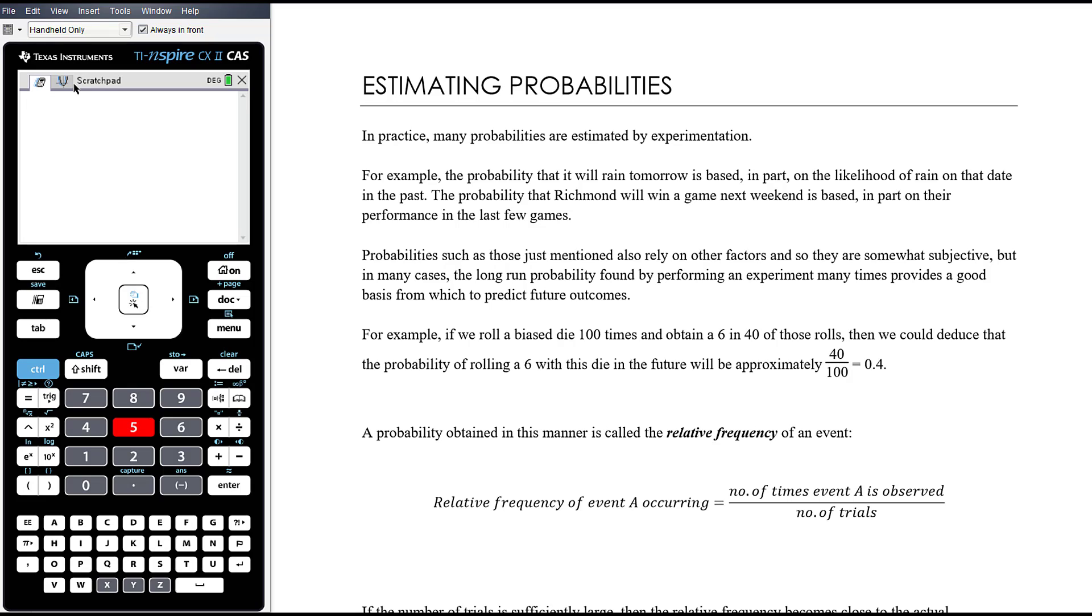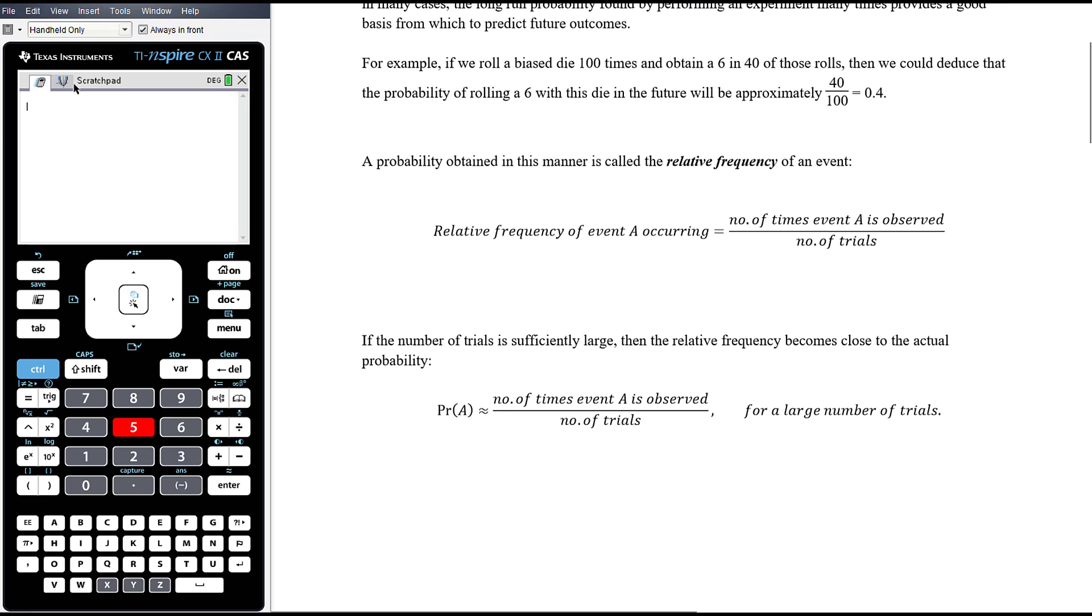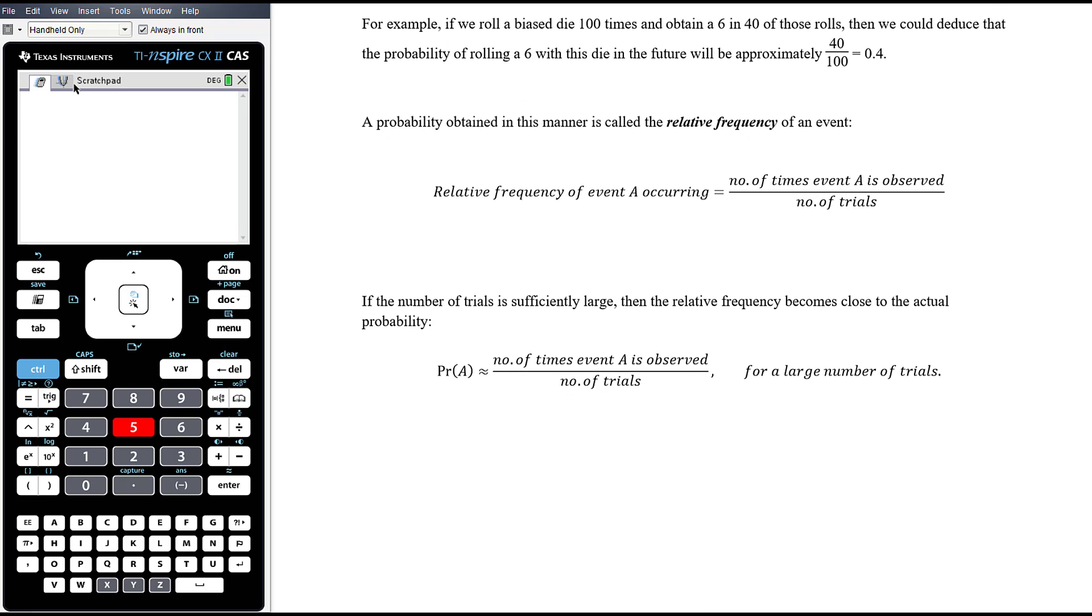A probability obtained in this manner is called the relative frequency of an event. To calculate the relative frequency of event A occurring, we look at the number of times event A is observed divided by the total number of trials we did. Now if the number of trials is sufficiently large, the more trials we get, the more reliable our probability will be. For a large number of trials, the relative frequency becomes close to the actual probability. So the probability of A is approximately equal to our relative frequency as long as we've done a large number of trials.